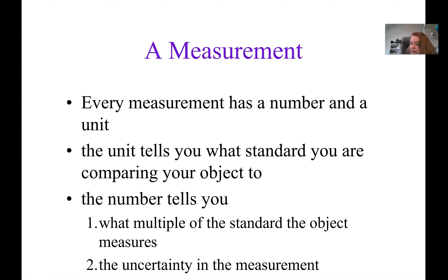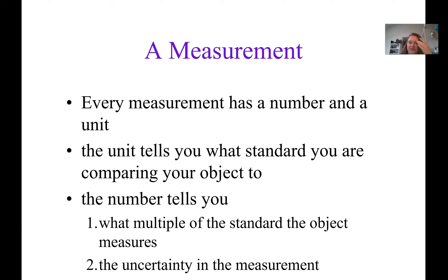When we have a measurement, every measurement has two parts: the number and the actual unit. We can't just say the length of the table is 5 — we have to say 5 feet, or 5 meters, or 5 centimeters. The unit is comparing our measurement to a standard value. The number itself tells you how much precision was used when measuring. There's a difference between saying the table is 5 feet long versus 5.3762 feet long — those were measured with very different precision values.